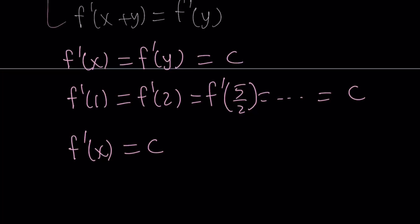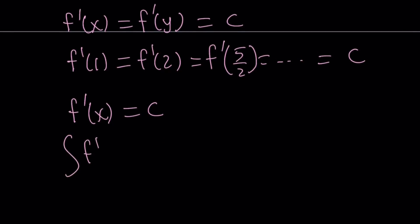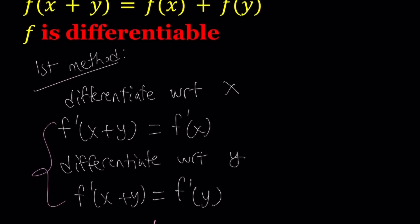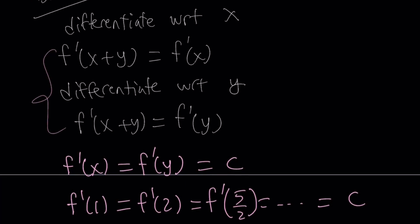So the derivative of this function at any point is constant, giving us f prime of x equal to a constant. What kind of functions give us a constant when differentiated? We can integrate both sides to find f of x. Integrating f prime of x dx equals c dx. The integral on the left-hand side is just f of x, and the right-hand side gives cx. We need another constant — let's use d — so f of x equals cx plus d. This gives us an idea about what f of x looks like: f is a linear function.